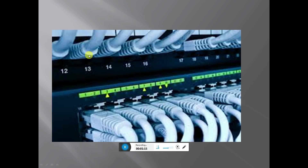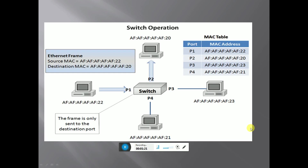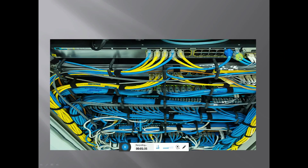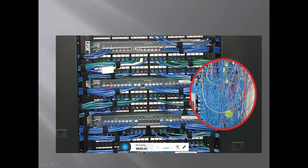This shows the switch connection and systematic wiring. The switch operates using destination MAC and source MAC addresses. Data forwarding is only to the destination node. Data sent by one node is shown here with proper rack wiring of switches — n number of switches connecting many computers.